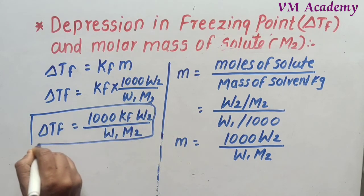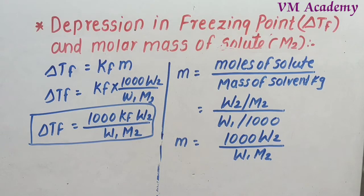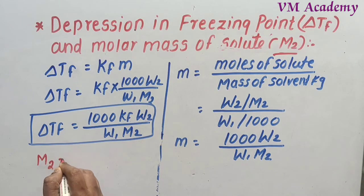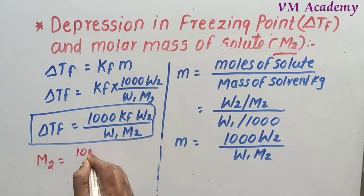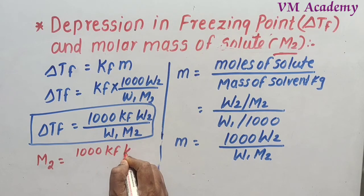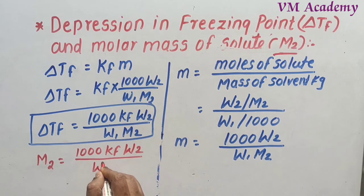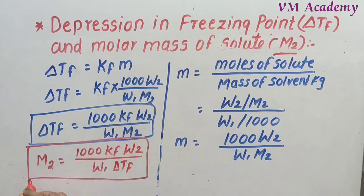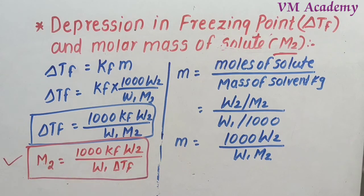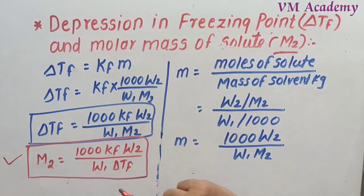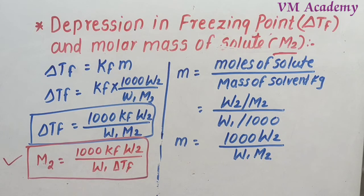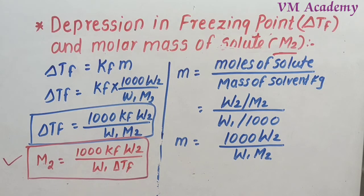So delta TF = 1000 × KF × W2 / (W1 × M2). This is our first formula. Rearranging for M2: M2 = 1000 × KF × W2 / (W1 × delta TF). This is the relation between depression in freezing point and the molar mass of the solute. By knowing all other quantities, we can easily calculate the molar mass M2 of the solute.